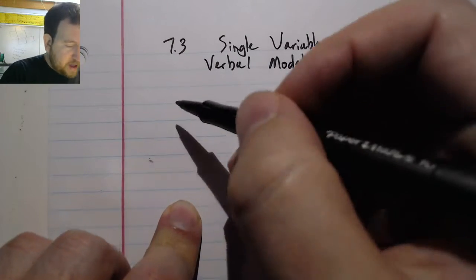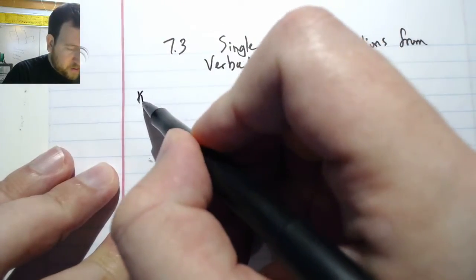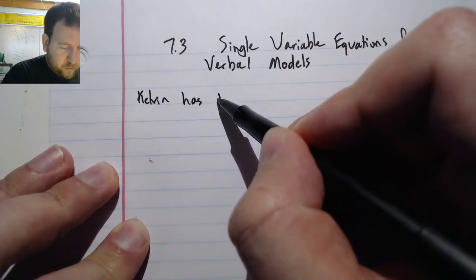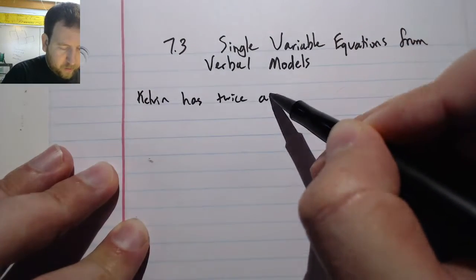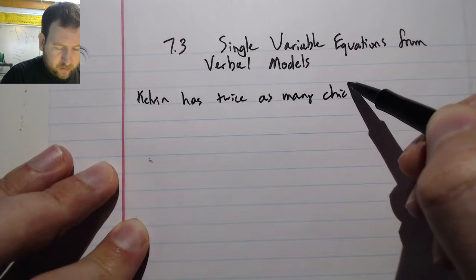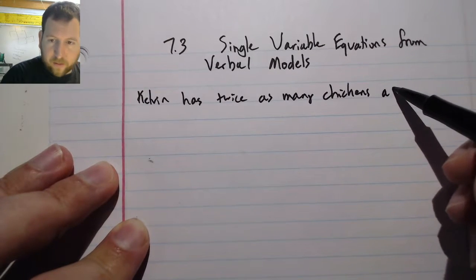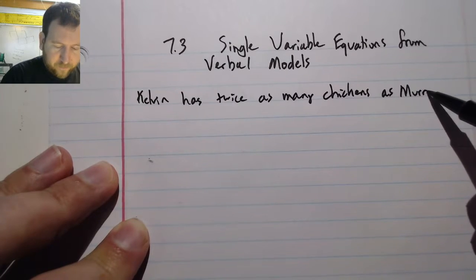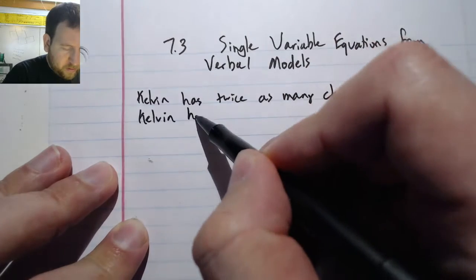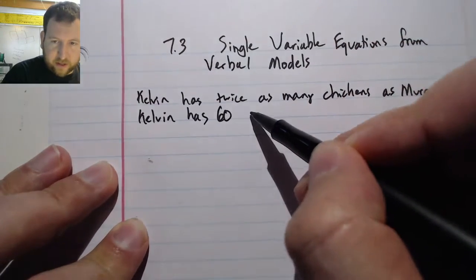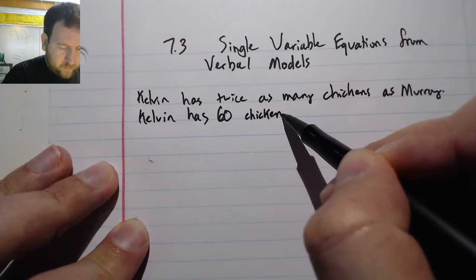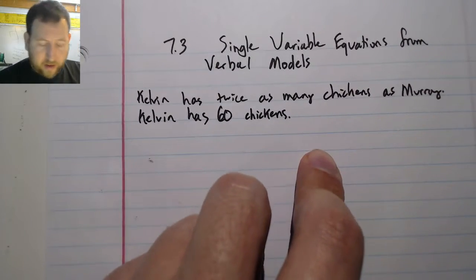Let's see, we have a chicken coop problem, and we have that Kelvin has twice as many chickens as Murray. Kelvin has 60 chickens.